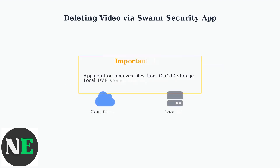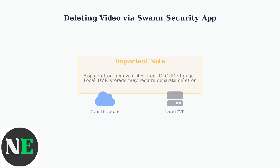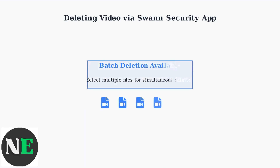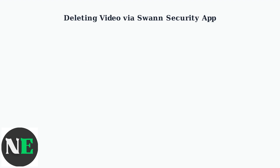Important note: when you delete videos through the mobile app, you are typically removing files from cloud storage. Your local DVR storage may still contain these recordings and require separate deletion. The Swan Security apps also support batch deletion, allowing you to select and delete multiple video files simultaneously.